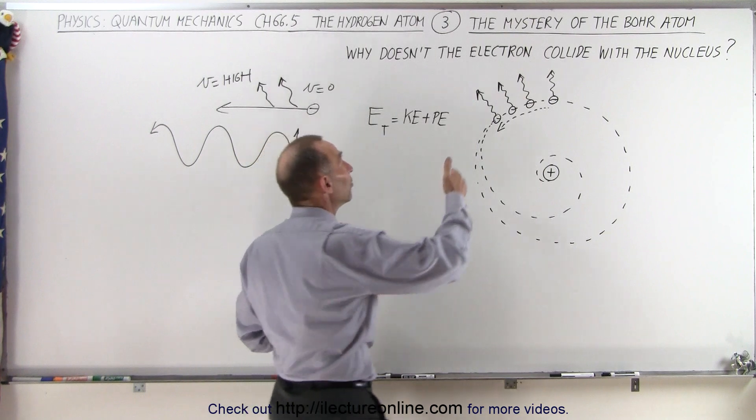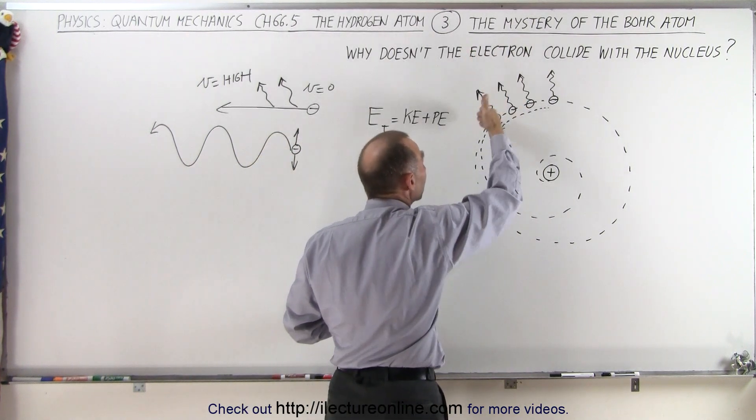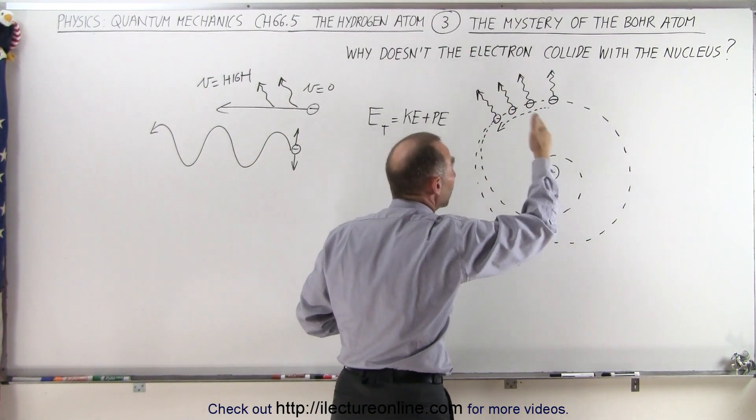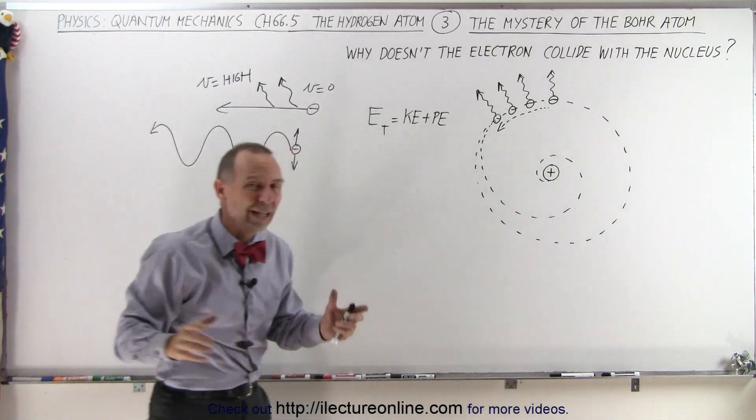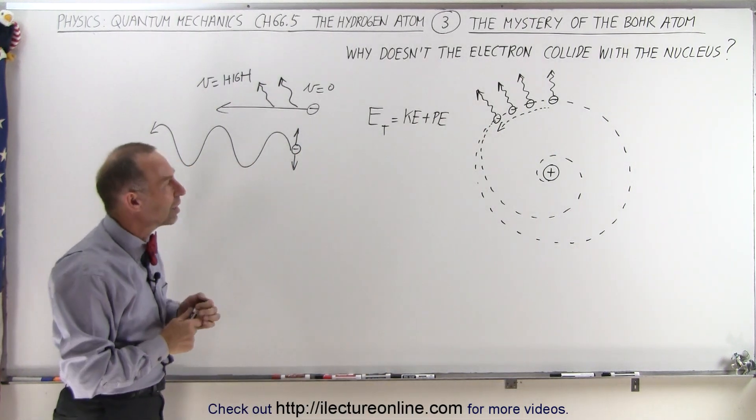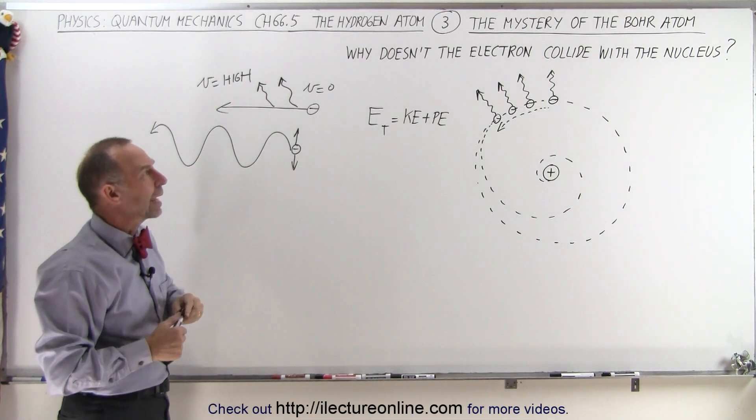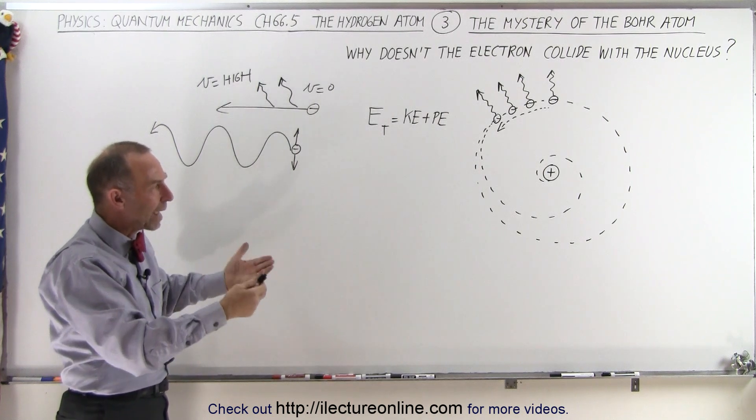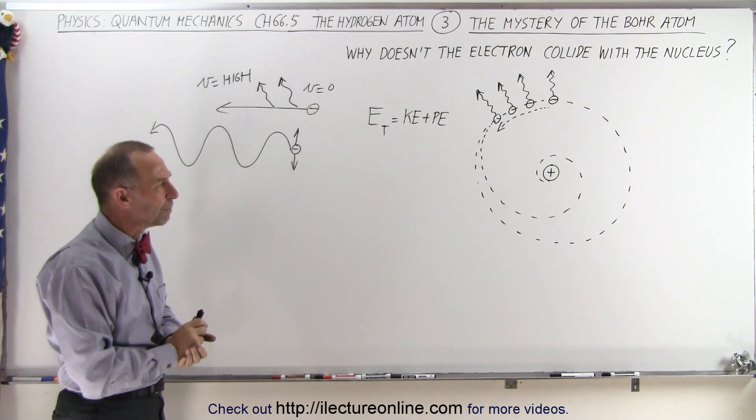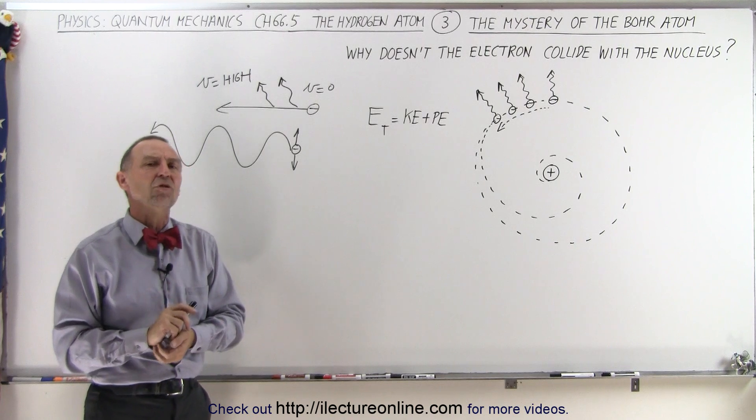In other words, why isn't the electron sending out energy, causing it to lose energy, causing it to slow down, and causing it to collide with the nucleus? That was the big mystery for quantum mechanics, for the study of the Bohr atom, for the study of atoms in general. And so that was a problem they had to solve.